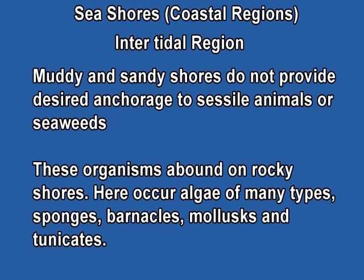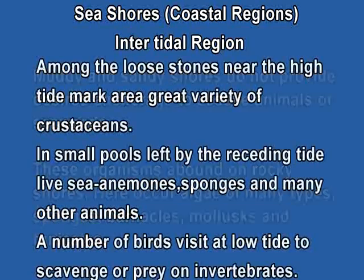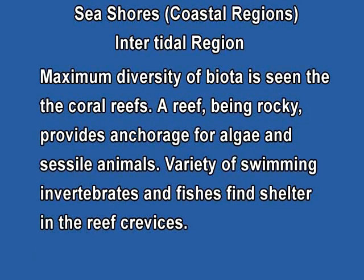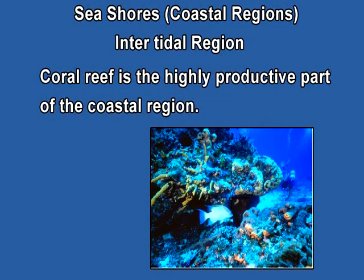Muddy and sandy shores do not provide desired anchorage to sessile animals or seaweeds — these organisms abound on the rocky shores. Here occur algae of many types, sponges, barnacles, mollusks, tunicates, etc. Among the loose stones near the high tide mark, a great variety of crustaceans are found. Birds visit at low tide to feed on invertebrates. Coral reefs occur in clear, shallow, warm water where temperature rarely falls below 20 degrees centigrade and there is enough light for photosynthesis. Reefs are made up of calcareous material secreted by coral polyps, tube worms, and other organisms. Maximum diversity of biota is seen in coral reefs, and coral reefs are the highly productive part of the coastal region.